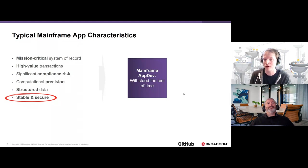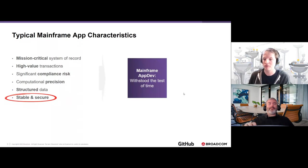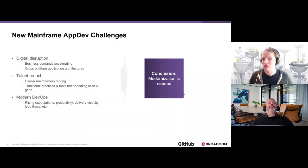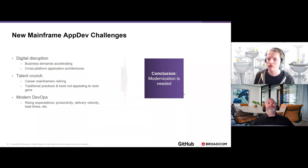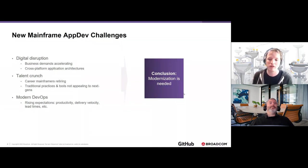There's a strong need to make sure these systems are as stable and secure as possible, with enough precision to ensure all computations can be processed without deviation. When we talk about the challenges of maintaining them, we see three real trends. First is digital disruption: as business demands accelerate, it requires faster changes to applications to deliver value to end users and customers. Those changes often require many cross-platform application architectures — delivering something via a mobile app requires a change to the app, the API layer, and perhaps the mainframe in the back end.